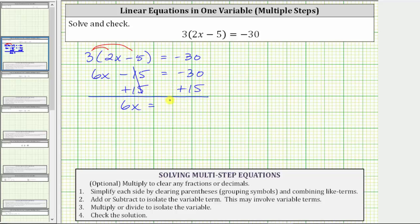The last step is to multiply or divide to isolate x. Because six x means six times x, to undo the multiplication, we divide both sides by six. On the left, six divided by six equals one. One times x is x. We have x equals negative 15 over six.